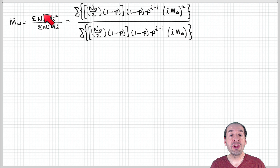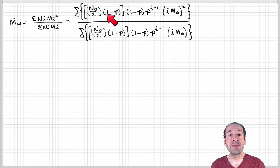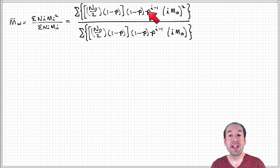We know the number of i-mers from the relationship we found previously: n₀/2 times (1-p) times (1-p) times p^(i-1). That's the total number of molecules that are i-mers at a given point in the reaction. The molecular weight of an i-mer we define as i times the monomer molecular weight.